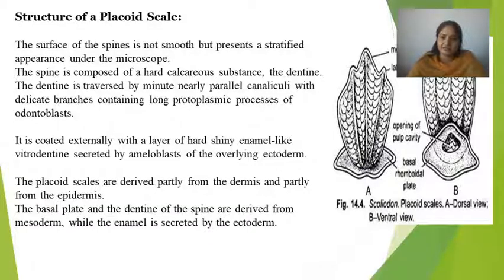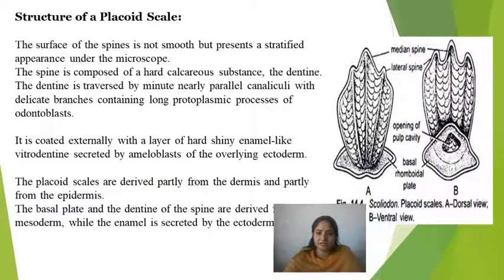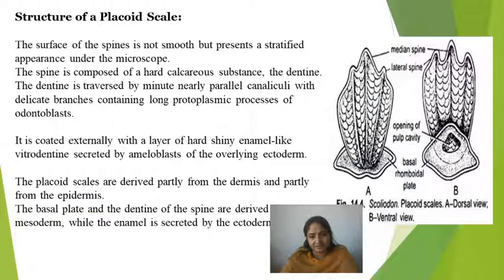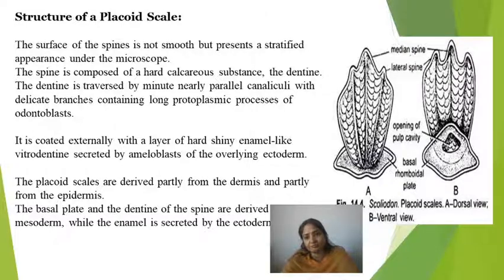Looking at the structure of Placoid scales: there is a basal rhomboidal plate present embedded in the dermis, and a spine projecting out of the body. The spine is a tridentate structure with a median spine and two lateral spines. On the ventral view, there is a pulp cavity in which blood vessels and nerve fibers enter and are responsible for growth.